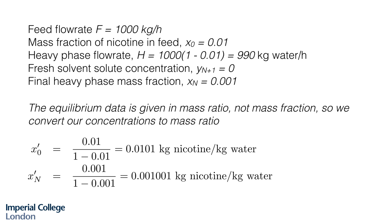First, to get our data in order, our feed flow rate we're given is 1,000 kilograms per hour. The mass fraction of nicotine in that feed is 0.01. We denote the feed in the aqueous phase as X nought. Our heavy phase flow rate then is denoted by H and that's equal to 1,000 multiplied by 1 minus that. So the flow rate of just water is 990 kilograms per hour.